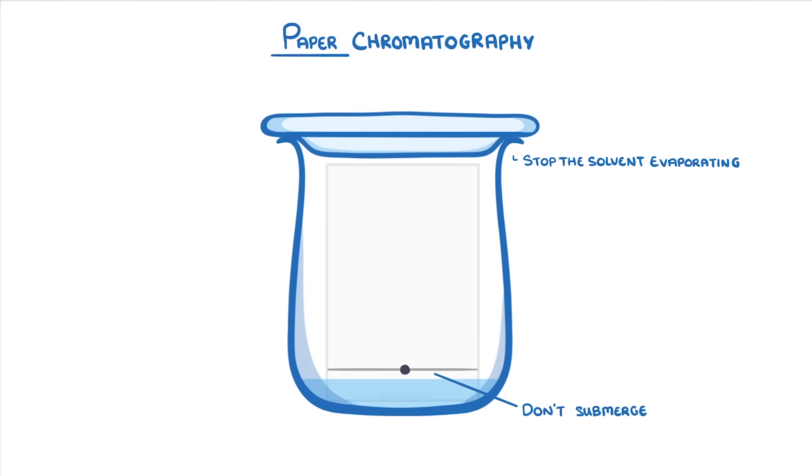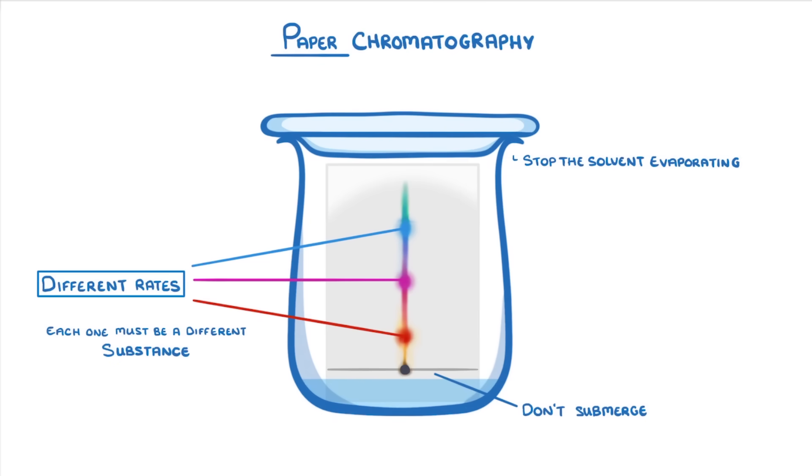Then we just wait for the solvent to seep up the paper, and as it does so, the different dyes that make up our ink will dissolve in the solvent and move up with it. What makes this interesting though, is that each of the different dyes will travel up the paper at different rates, and so they'll end up separating out, which tells us that each one must be a different substance.